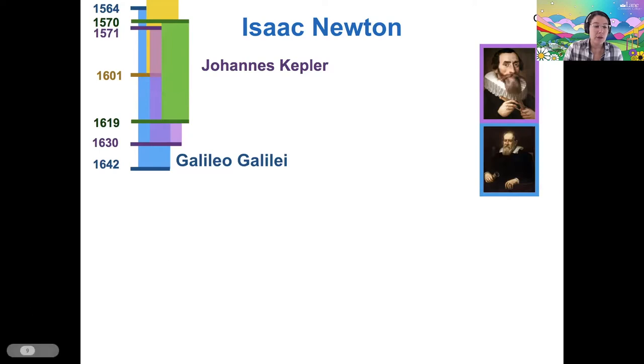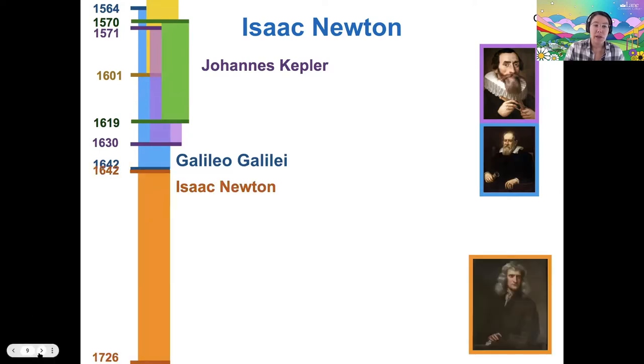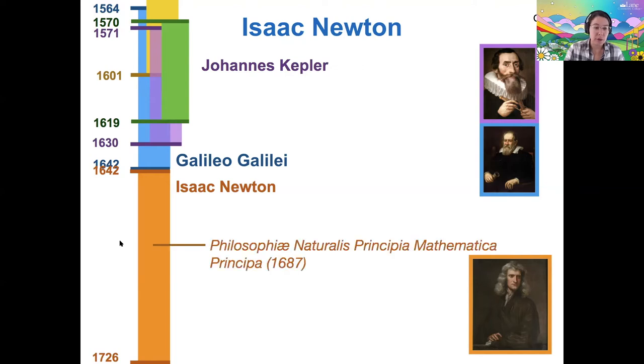Isaac Newton was born actually the same year that Galileo died, and is a bit of a strange figure, but a very famous physicist who published something called the Philosophiae Naturalis Principia Mathematica. Most people call it the Principia.